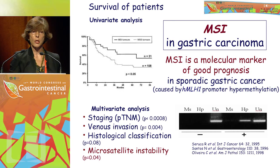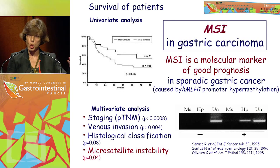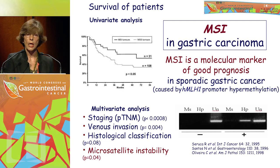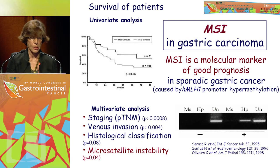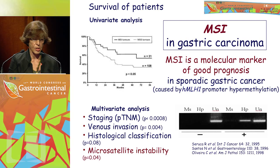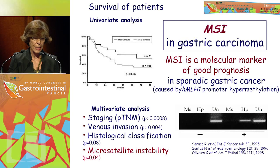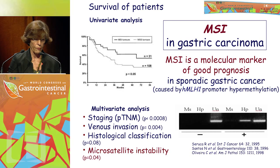Regarding microsatellite instability, I'm sure oncologists in this room are more used to asking for MSI in colorectal cancer, but it occurs in gastric cancer in about 15 to 20 percent of cases and is considered a molecular marker of good prognosis — similar to what happens in the colon. In gastric cancer, microsatellite instability is due to promoter hypermethylation of the MLH1 gene.